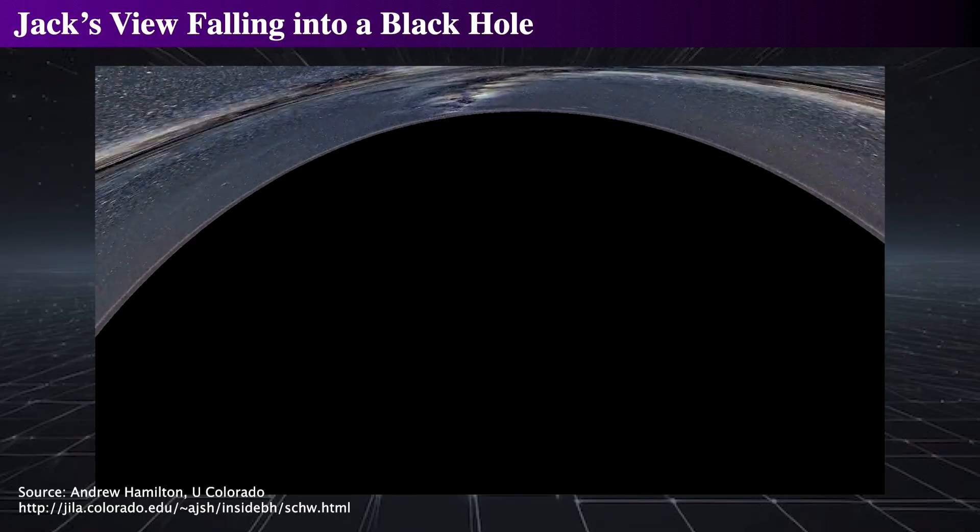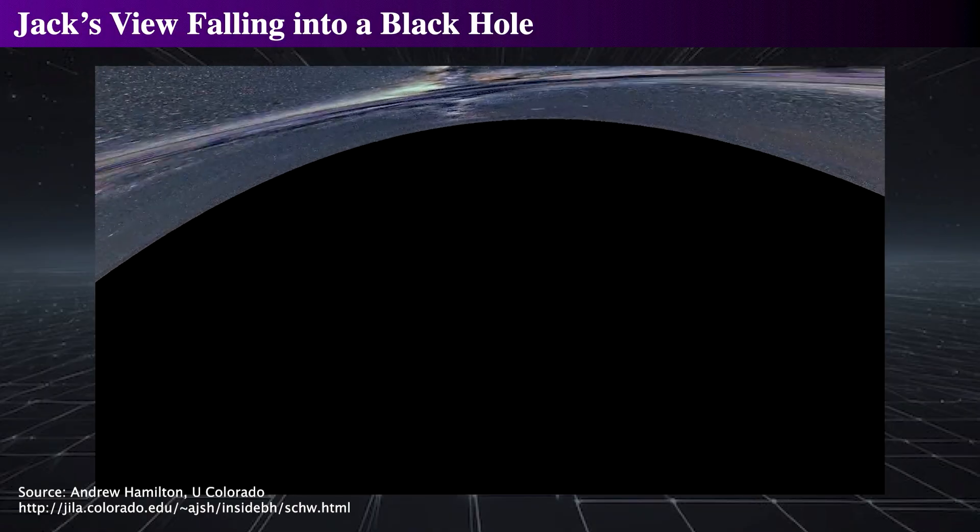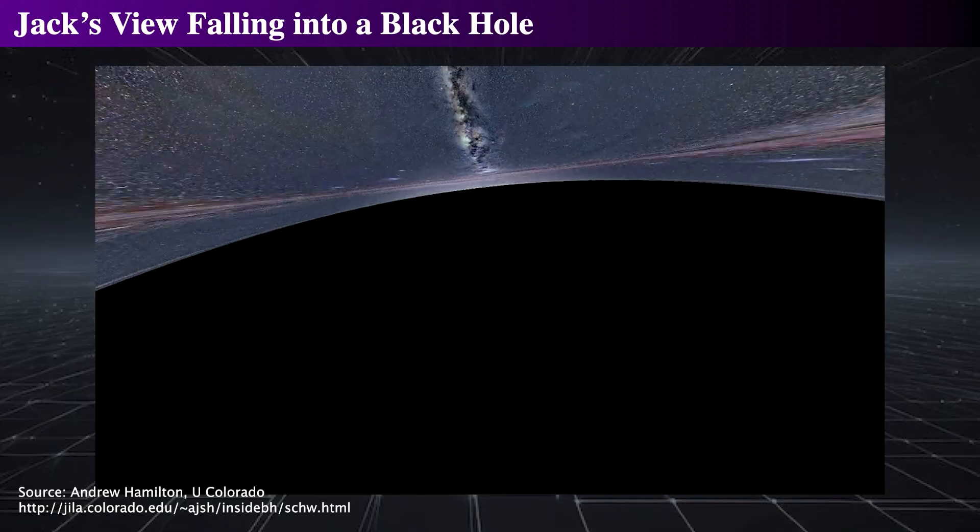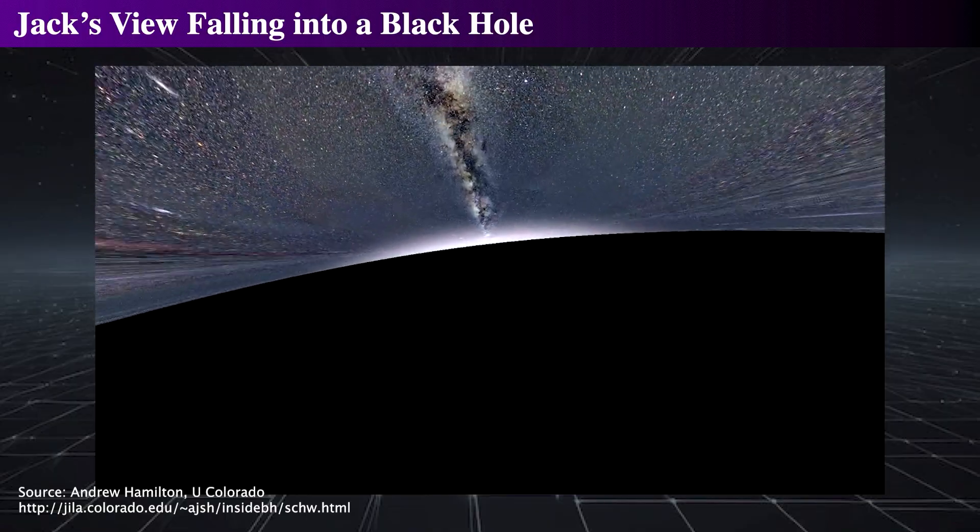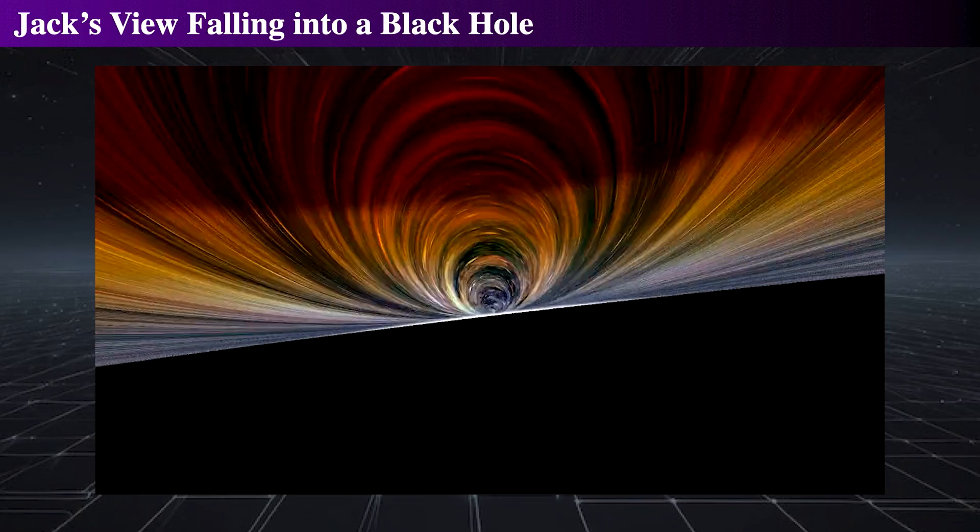Eventually, Jack crosses the event horizon, continuing down to the singularity. At this point, he is at the center of the hole. It is interesting to note that even when reaching the very center, Jack continues to see stars above him, while the black hole looms as a vast plane below.